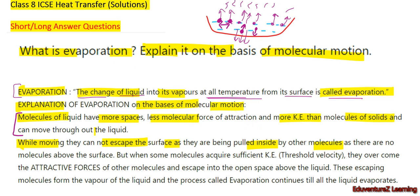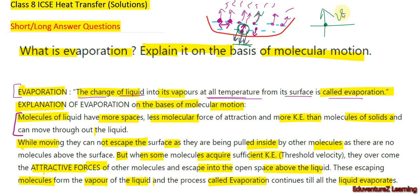But when some molecules acquire sufficient kinetic energy, they can overcome the attractive forces being applied on them by the other molecules and escape into the open space above the liquid. These escaping molecules form the vapor of the liquid, and the process called evaporation continues until all the liquid evaporates. So to escape from the surface, a molecule needs sufficient kinetic energy to overcome the attractive forces applied by the other molecules — and this is how evaporation takes place.